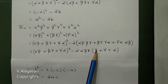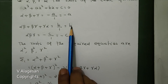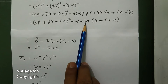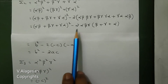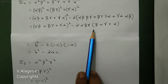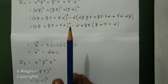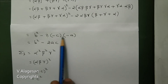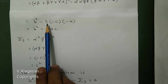This simplifies to (alpha·beta + beta·gamma + gamma·alpha)² - 2·alpha·beta·gamma·(alpha + beta + gamma). Substituting: alpha·beta + beta·gamma + gamma·alpha = b and alpha·beta·gamma = -c and alpha + beta + gamma = -a, we get b² - 2·(-c)·(-a) = b² - 2ac.